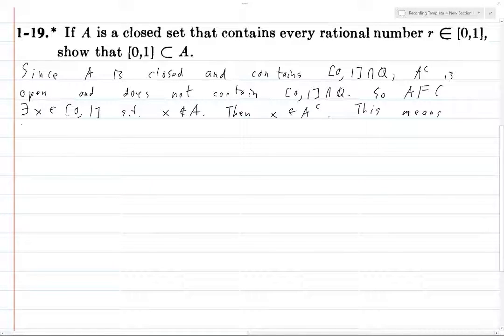So A complement is open, so this point must have an open neighborhood. And we know that the open sets on the real line, in particular, now that I think about this is a slightly deeper real analysis fact,